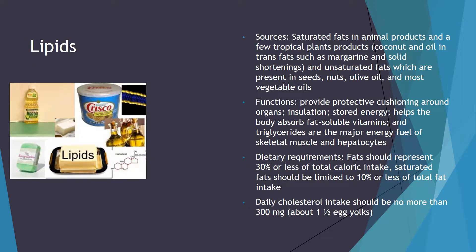The next nutrient we're going to look at are lipids. Sources of lipids are saturated fats in animal products and a few tropical plant products such as coconut oil, and trans fats such as margarine and solid shortening. Unsaturated fats are present in seeds, nuts, olive oils, and most vegetable oils. Functions of lipids include providing protective cushioning around the organs, insulation, and stored energy.